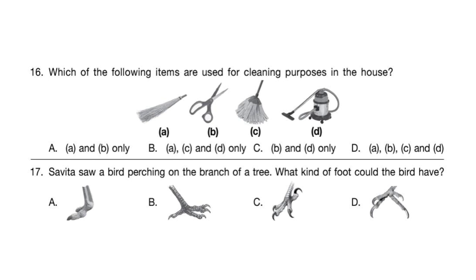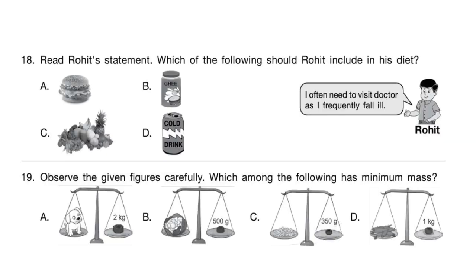Question 17 and 18: What kind of food could the bird have? The correct answer is option B. Question 18: Read Rohit's statement — which of the following should Rohit include in his diet? Rohit says he often needs to visit the doctor as he frequently falls ill. The correct answer is option C — fruits. He should include fruits in his diet.